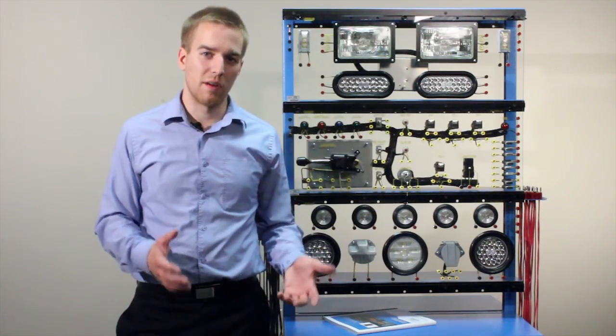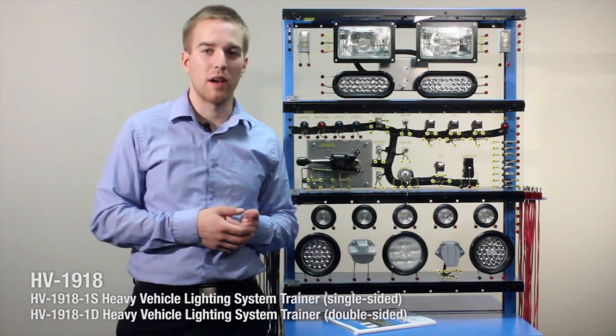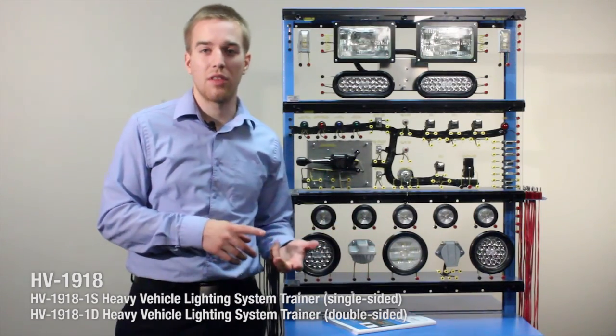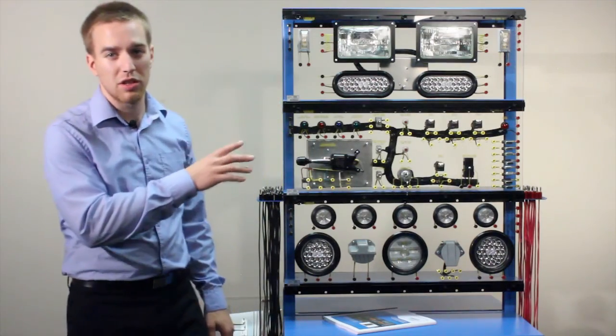Now here's the last model that I want to show you today. This is the HV 1918 1S. Now these are all components from a heavy vehicle, either an on-highway truck or heavy equipment.